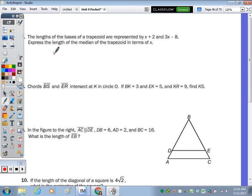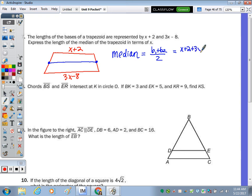Number seven, the lengths of the bases of a trapezoid are x + 2 and 3x - 8. Express the length of the median in terms of x. The median is base 1 plus base 2 over 2. Adding x + 2 and 3x - 8, we get 4x - 6. Divide that by 2, so 4x divided by 2 is 2x, negative 6 over 2 is negative 3. The answer is 2x - 3.